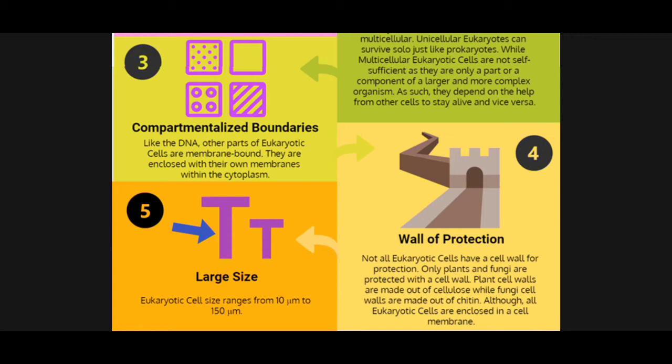Number five is the last one: large size. Compared to prokaryotic cells, eukaryotic cell sizes range from 10 micrometers to 150 micrometers, which is a very big difference when you compare eukaryotic cells to prokaryotic cells. Now that we have tackled the characteristics and differences of the two types of cells, we will look into the parts of these cells.